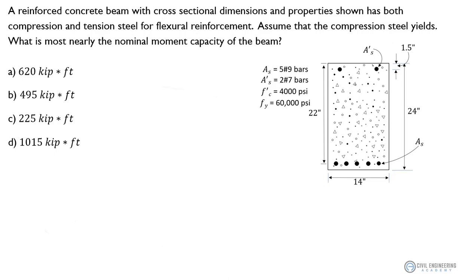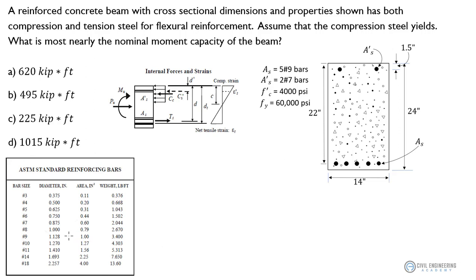So if we'll remember a couple things, if you look at your FE reference handbook, we're going to look at a couple things. First of all, we got to figure out how much area these five number nine bars are giving us, and how much two number seven bars are going to give us. And so if we look at our ASTM standard reinforcing bars, this chart that's listed in our handbook, we can come down here and see that we've got number nine bars have an area of one inch even. So we could say that our five number nine bars are going to give us basically five times one, so that's going to give us five inches squared of steel.